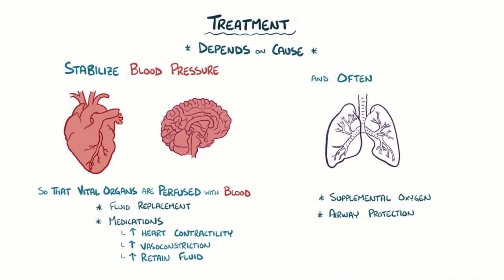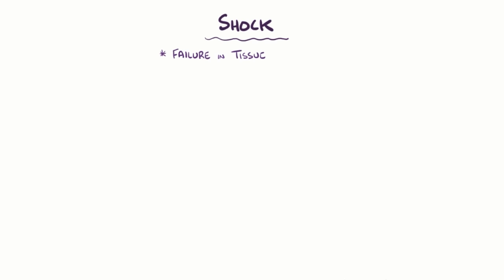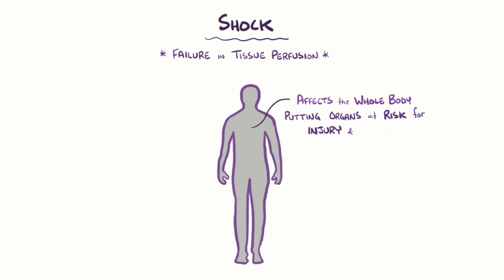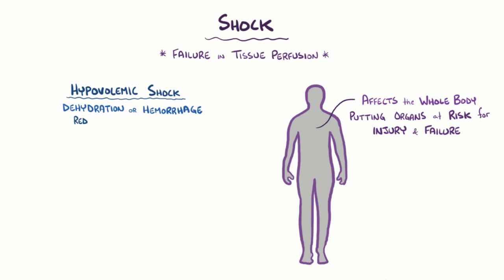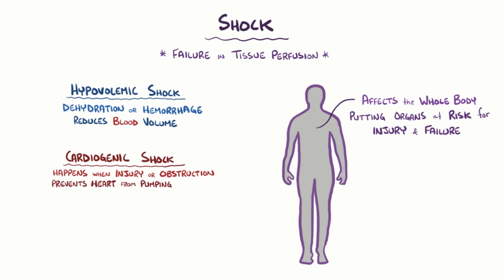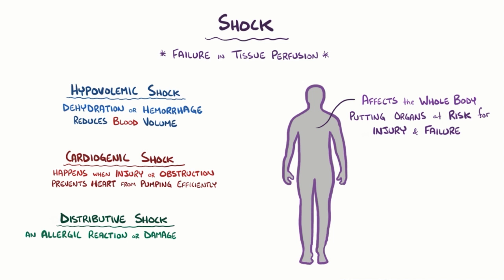As a quick recap: shock is ultimately a failure in tissue perfusion affecting the whole body, putting organs at risk for injury and organ failure. Hypovolemic shock happens when dehydration or hemorrhage reduces blood volume. Cardiogenic shock happens when a heart attack or obstruction like pericardial effusion prevents the heart from pumping efficiently. Distributive shock happens when an allergic reaction, sepsis, or neurogenic damage causes vasodilation and leaky blood vessels, reducing resistance and lowering blood pressure.